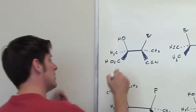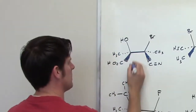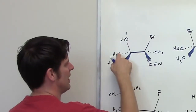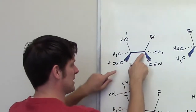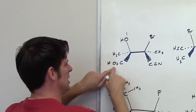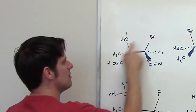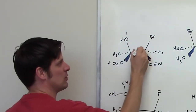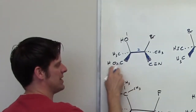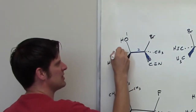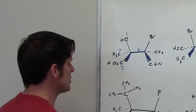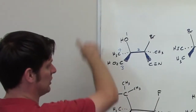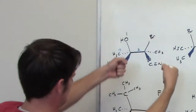So we'll go ahead and tackle this stereocenter right here. It's bound to an oxygen, a carbon, a carbon, and a carbon. Oxygen wins. I've got these three carbons — let's break the tie. Carbon out here goes to a bromine, carbon out here goes to oxygen, carbon out here goes to hydrogen. Bromine is the winner, which means this entire branch to the right is group number two with respect to this stereocenter, while the one bound to oxygen is group number three, and the methyl is group number four. Group number four is pointing three-dimensionally away from us. Tracing from one to two to three is clockwise, which means it is R.